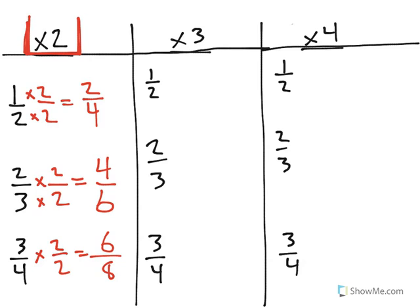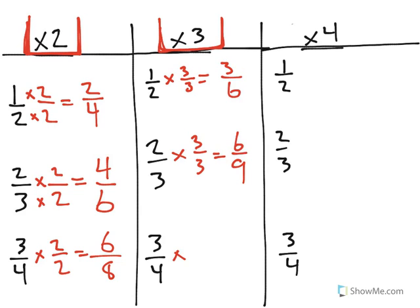Now, the reason that we have this again, times 3 and times 4, is because it doesn't matter what number you multiply by. As long as you are multiplying by the same number in the numerator and denominator, you're going to end up with an equivalent fraction.